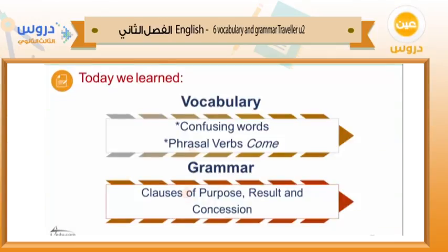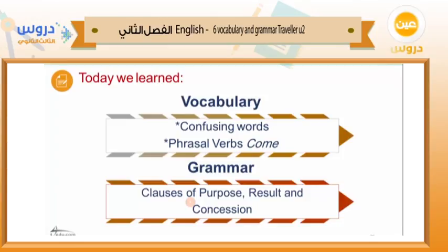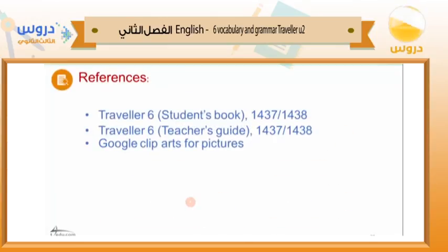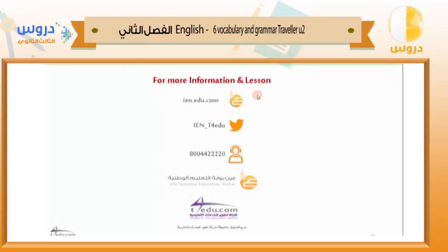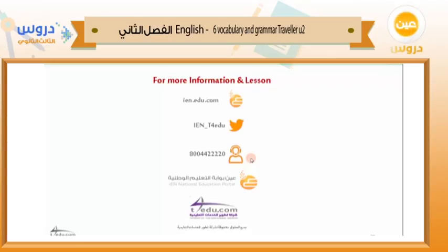So far today, we've learned a bunch of vocabulary — some confusing words and some phrasal verbs with the verb 'come.' For grammar, we talked about clauses of purpose, results, and concession with adverbial clauses like 'even though,' 'in spite of,' 'despite,' 'so that,' 'in order to,' and 'so.' These references are taken from your book, The Traveler 6. For more information and lessons, you can visit our website, follow us on Twitter, or call us for any technical support. Thank you for watching and assalamu alaikum.